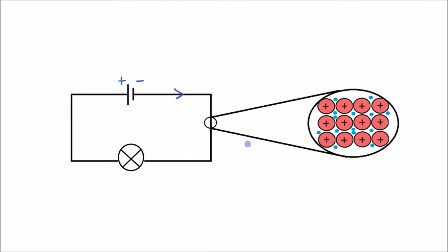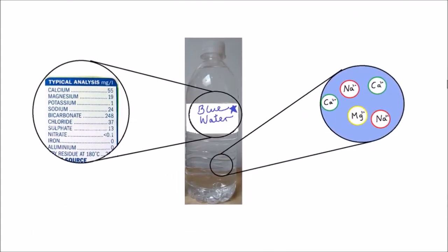So is current the flow of electrons? Well, yes and no, because how do we explain why water conducts electricity? We know that it does, but how do we explain that? Water is not made of metal, it doesn't have free electrons. So what's happening when water conducts electricity?